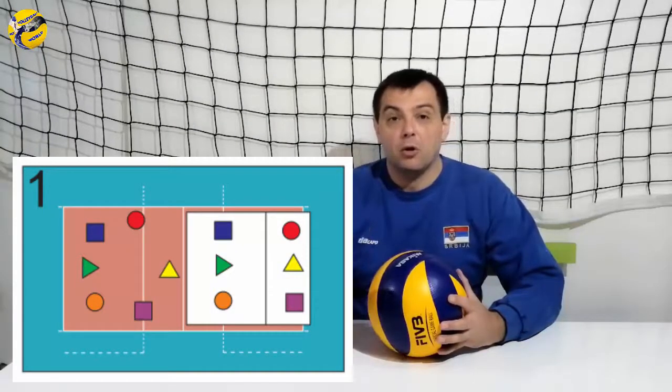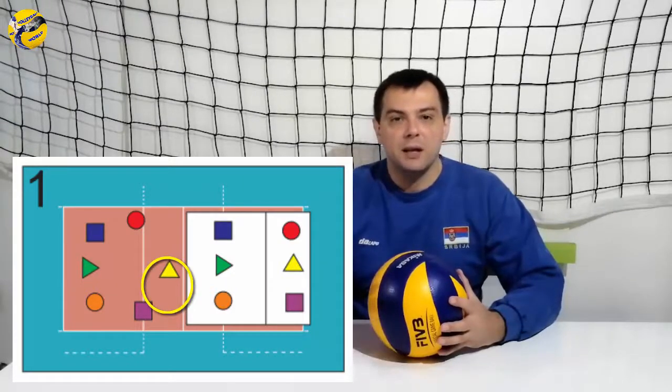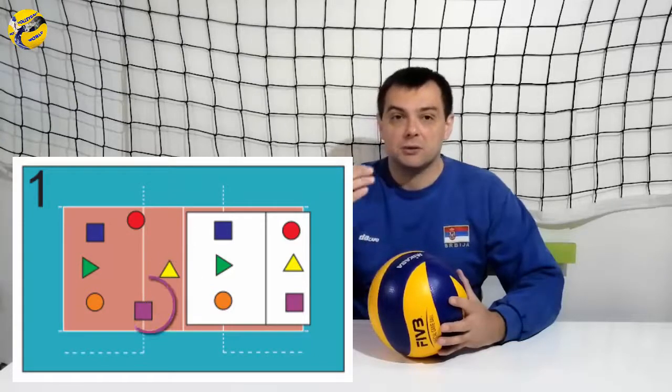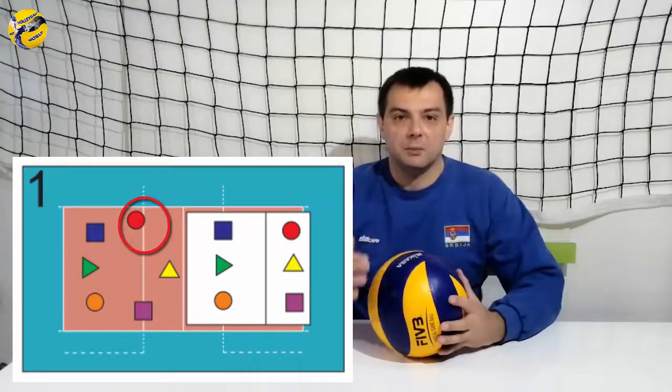When the team is on receiving, the setter can stay between positions two and three and wait for the receive, while middle hitter is on the three meter line at the right and the receiver is on the left three meter line.